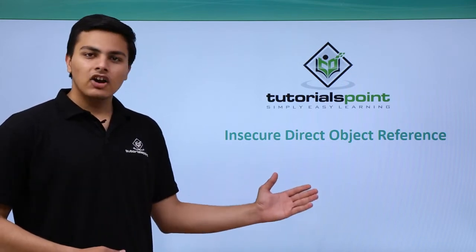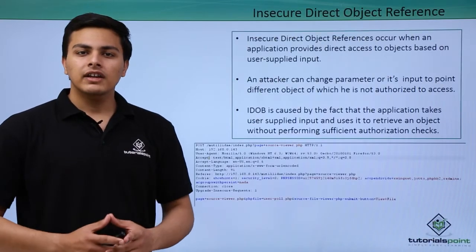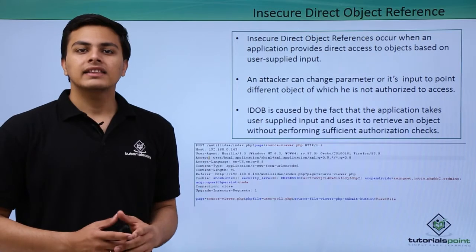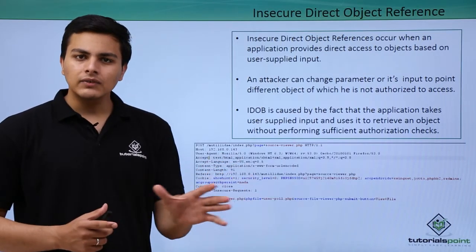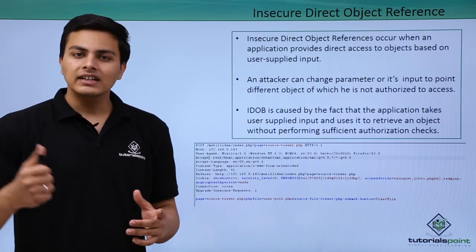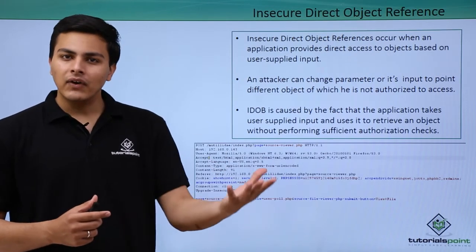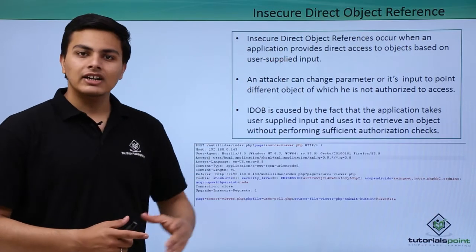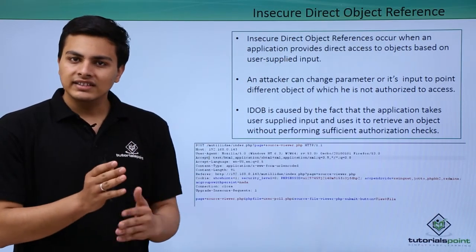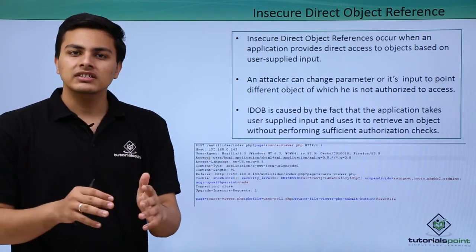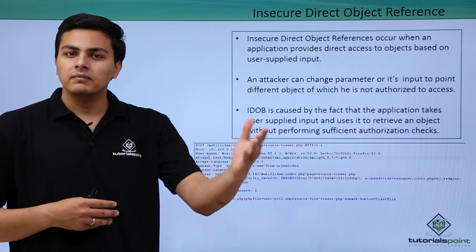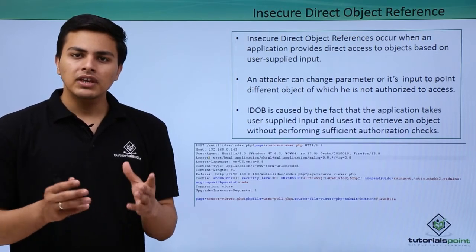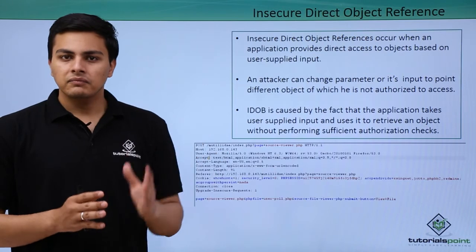Let's talk about Insecure Direct Object Reference vulnerability, also referred to as IDOR. There are five objects or files, and there is another file called demo. We can access all five objects if our request contains a reference to that demo file. If we try to access those objects without the reference of the demo file, we are not able to access them. In IDOR, the user-supplied input is used to access a particular object, and if the user adds something malicious it can point to a different object — meaning a user tries to access an object which they are not authorized to access.